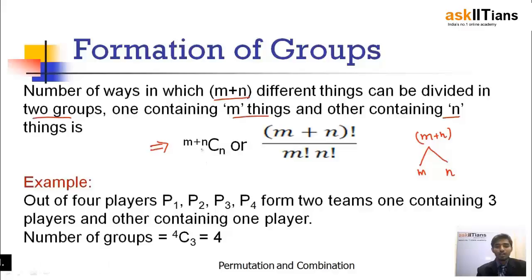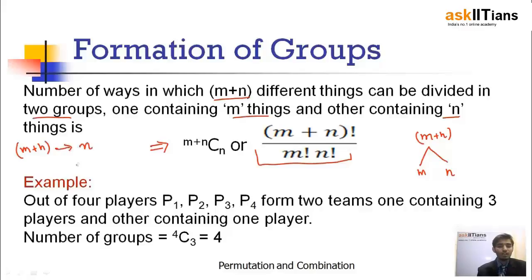The number of ways is given by m+nCn, which equals (m+n)! divided by m! × n!. Essentially, we are selecting any n things out of m+n different things, and the remaining m things automatically form the other group.